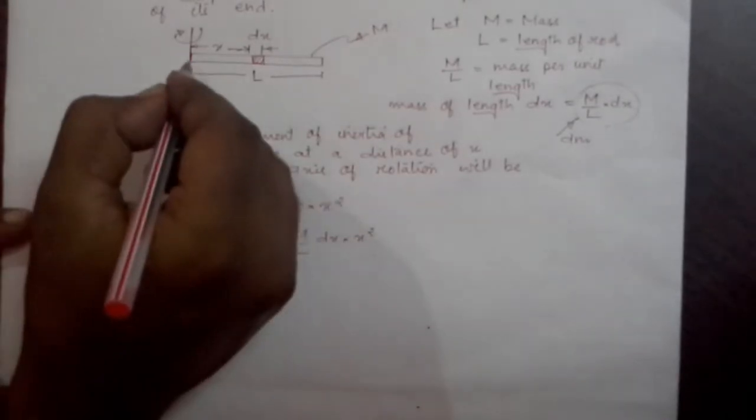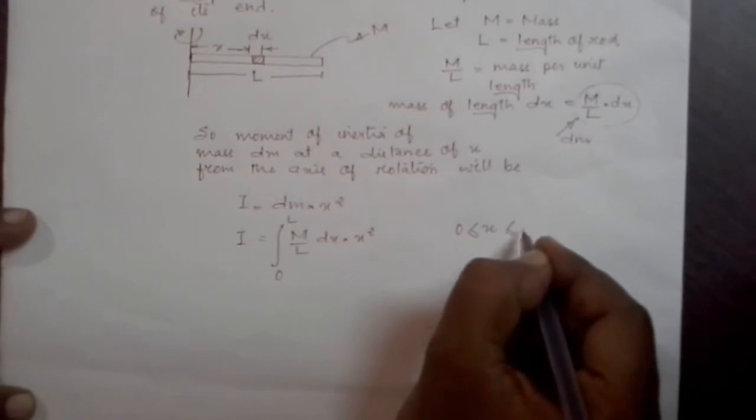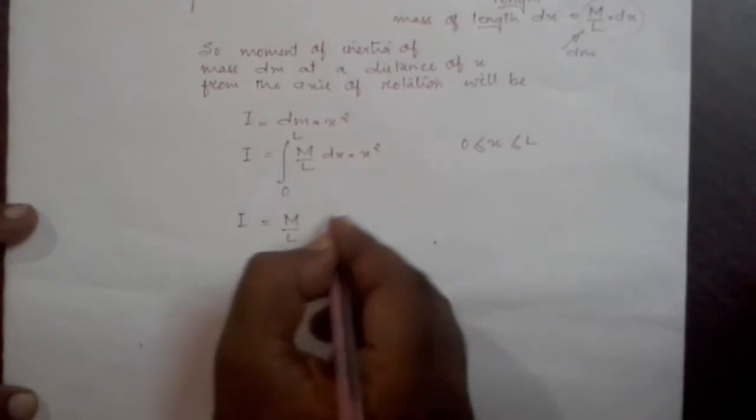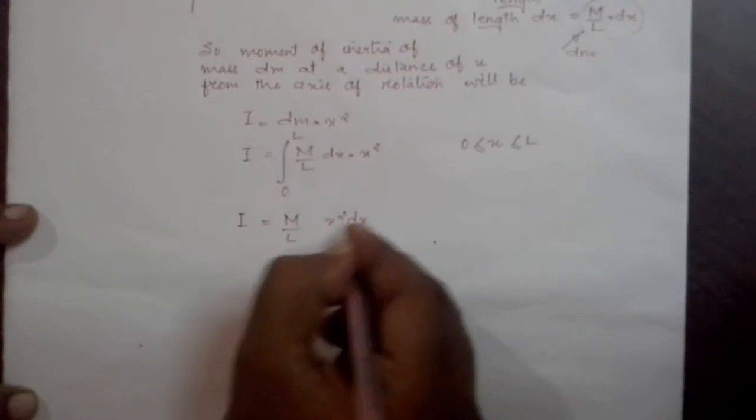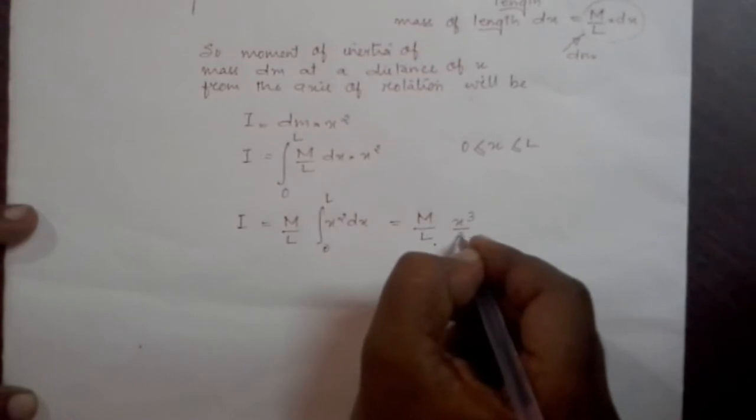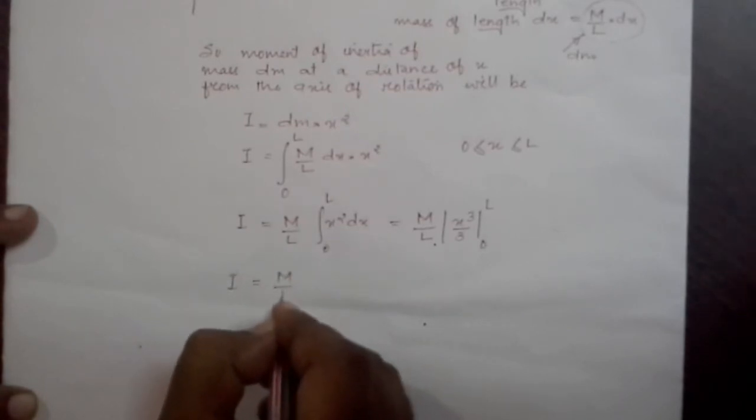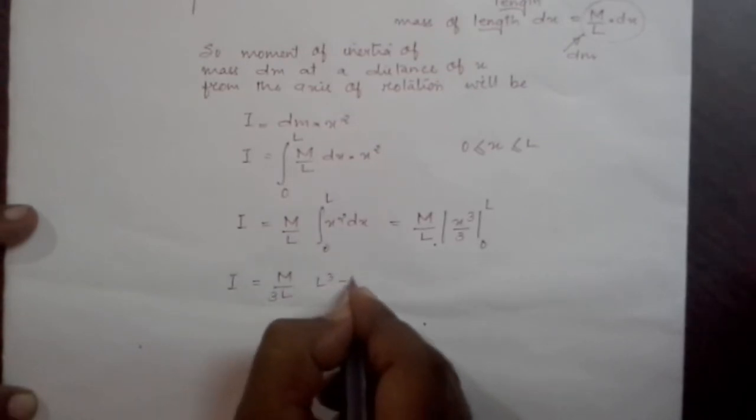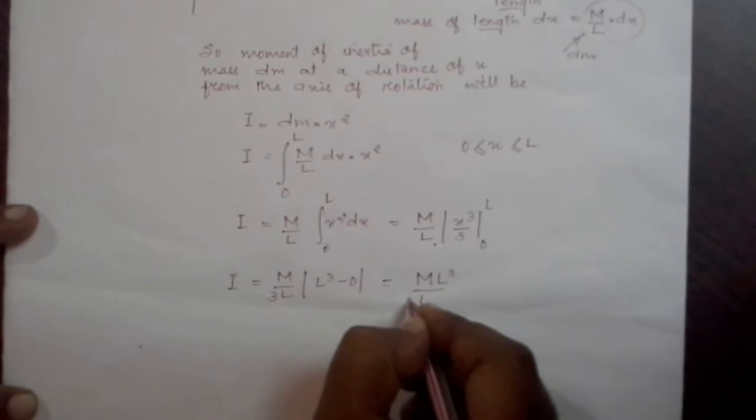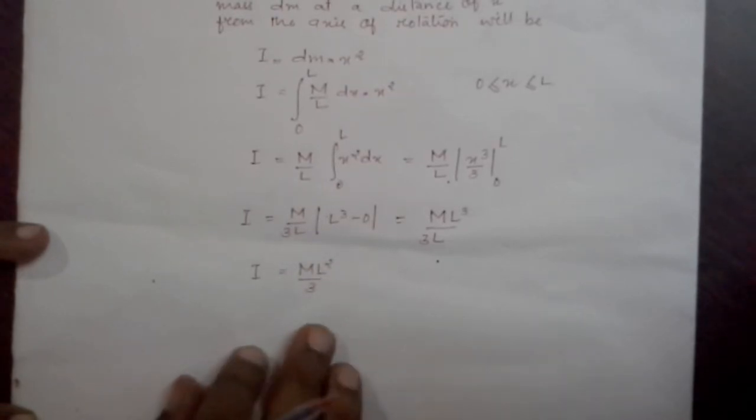Now we will integrate this dx from value of x from 0 to L, where x is greater than or equal to 0 and less than or equal to L. So now we can write I is equal to M by L into x square dx integration 0 to L, which will be equal to M by L into x cube by 3 varying from 0 to L. Now putting the limits we get I is equal to M by L into L cube minus 0, or that is equal to M L cube by 3L, or I can write I is equal to M L square by 3.